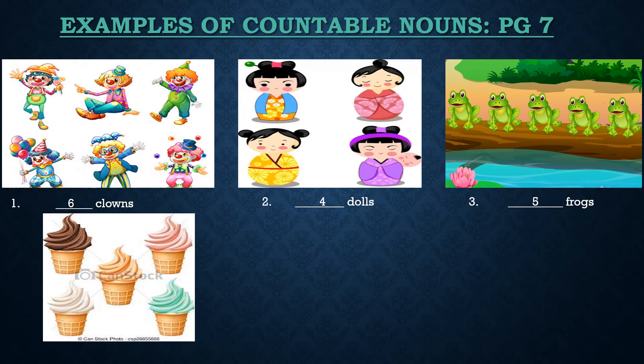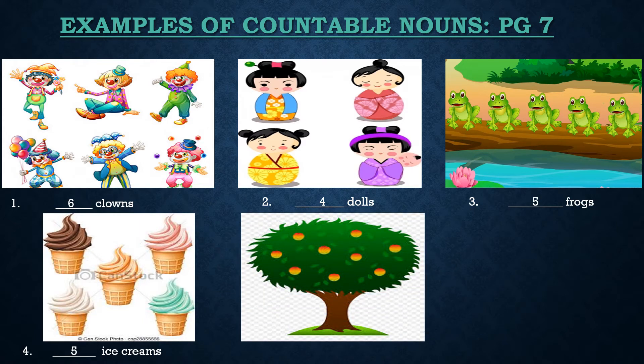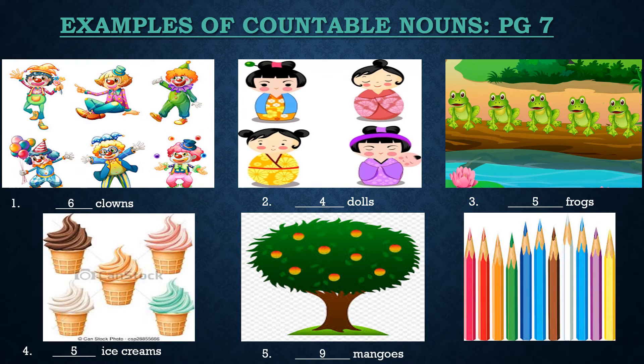In the next picture there are ice creams — 1, 2, 3, 4, 5. There are 5 ice creams in this picture. In the next picture there are mangoes. Counting: 1, 2, 3, 4, 5, 6, 7, 8 and 9. There are 9 mangoes. The last picture shows crayons, and there are 11 crayons in this picture. So let us write down 11 with our pencil in the book.